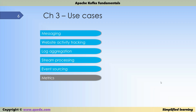Event sourcing is a design pattern where state changes are logged as a time-ordered sequence of records. Kafka fits this pattern since it allows storing very large log data. Finally, Kafka can also be used for metrics — to collect and monitor metrics for a distributed application.